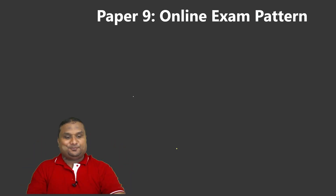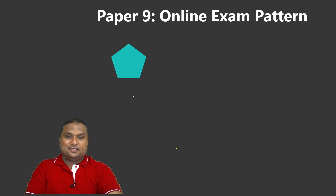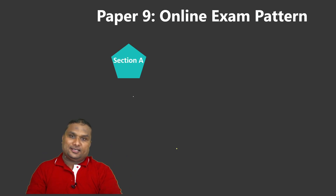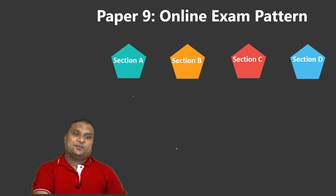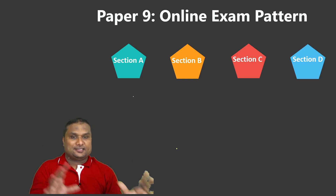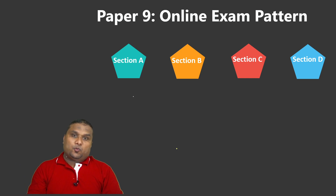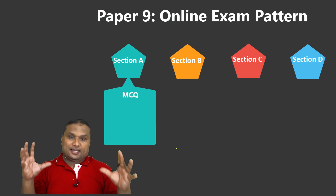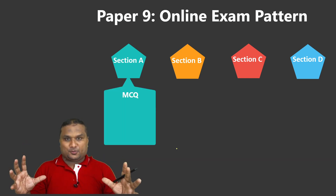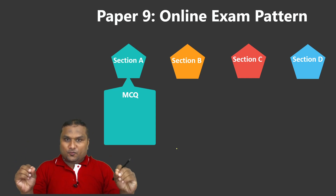The Paper 9 exam has four different sections: Section A, Section B, Section C, and Section D. In Section A, it's MCQ — multiple choice questions where you have four options.